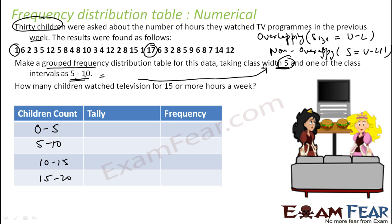If they had given the width as 6, then you would have to make it a non-overlapping class. But since the formula and the data confirm this is an overlapping class, we proceed with that.